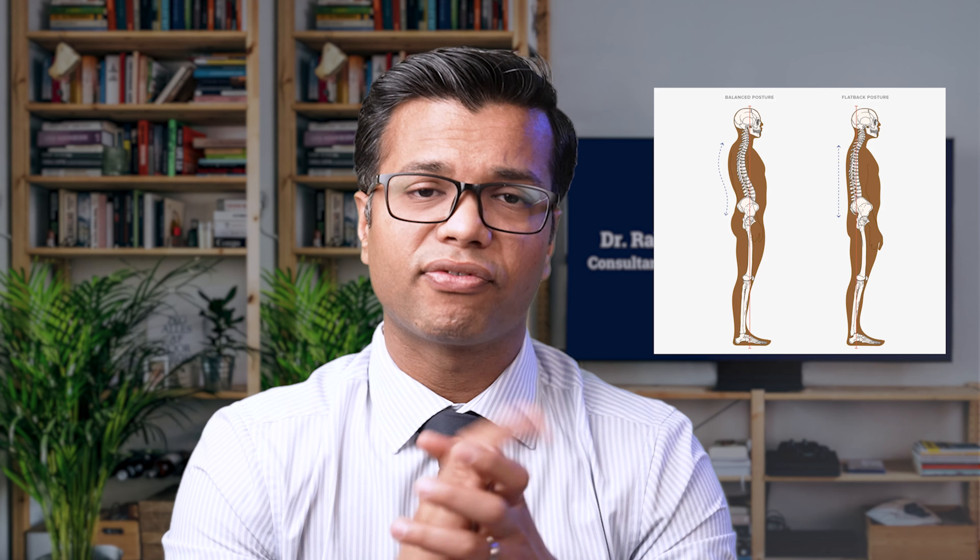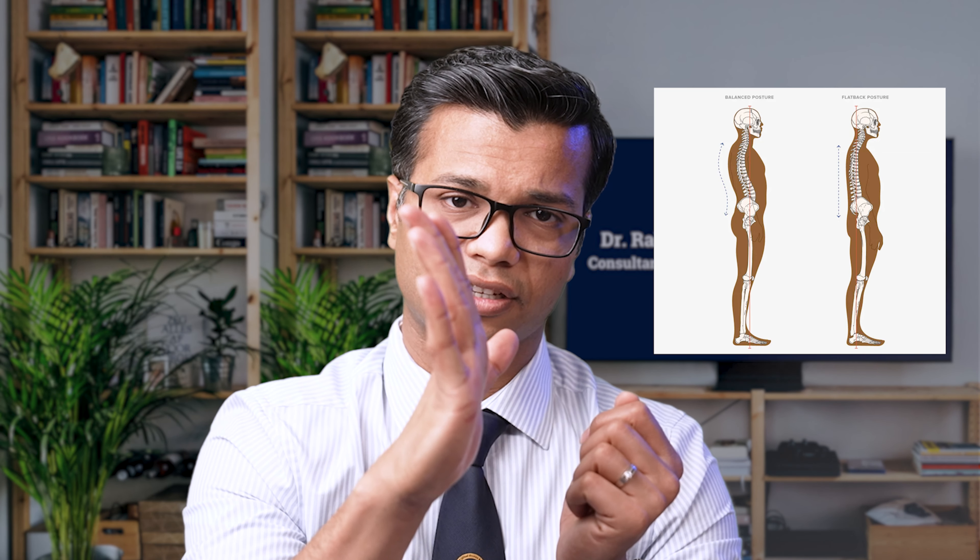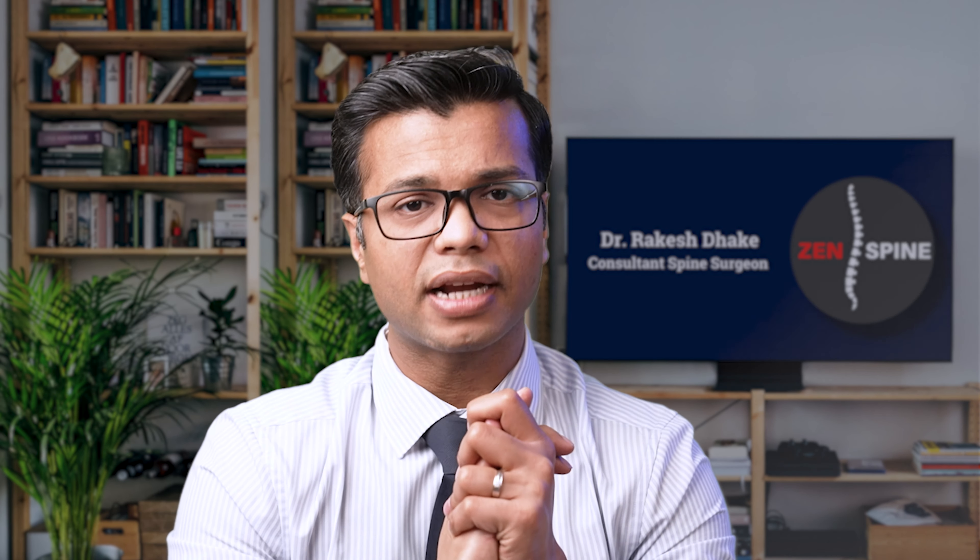Then there is a condition in the lumbar spine where there is loss of lordosis. So instead of the normal curvature in the lumbar spine which is concave, these people develop flat back — the back becomes straight instead of curved. That flat back can happen due to just muscle spasm, or it can happen due to degeneration, wear and tear in the spine, or previous spinal surgery.